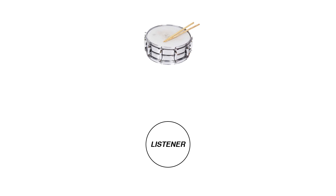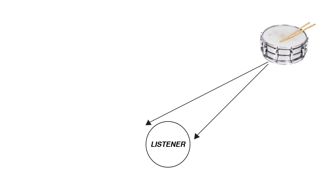Imagine a snare drum placed directly in front of you. The sound from the snare drum travels the same distance to both your left ear and your right ear and is therefore equally loud in both ears. This tells your brain that the snare drum is directly in front of you. However, if the snare drum were placed off to your right side, the sound would take a longer path to your left ear and would be slightly quieter by the time it reached the left ear, indicating to your brain that the sound originated on your right side.